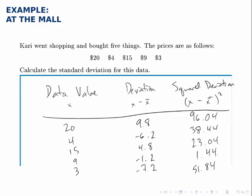Then here all the squared deviations are filled in. Now we need to add those squared deviations, divide by n minus 1 or 4 in this case and then take the square root of the answer.